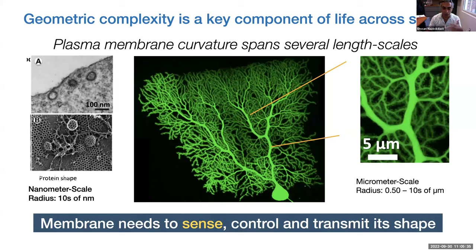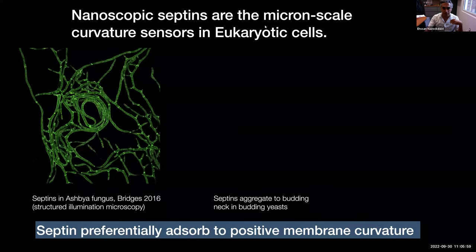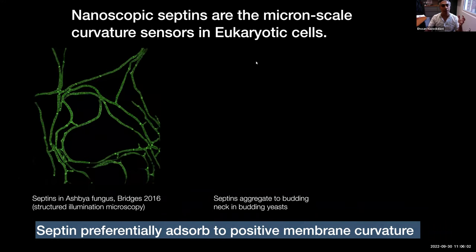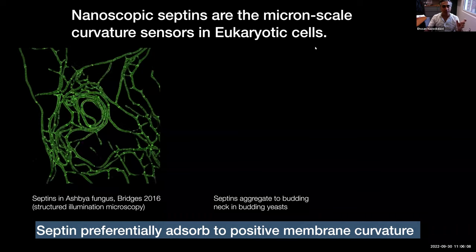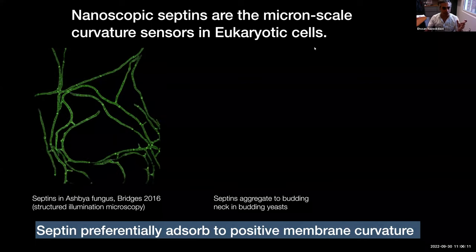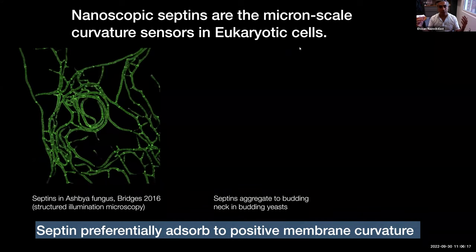In this talk we're focusing only on the sensing component — not inducing shape or transmitting information. There are many sensors operating at different length scales specifically designed to sense membrane curvature. Among those, we're interested in septins. Septins are nanoscopic in length scale; the oligomer itself is only 32 nanometers across, but they can sense curvature at the micron scale in eukaryotic cells — a huge change in length scale.